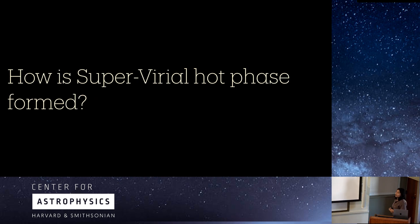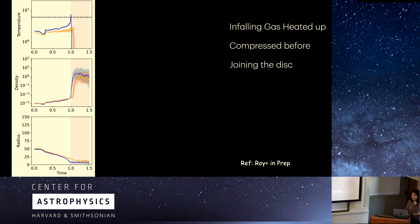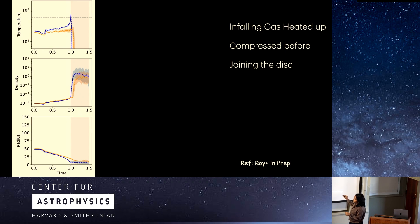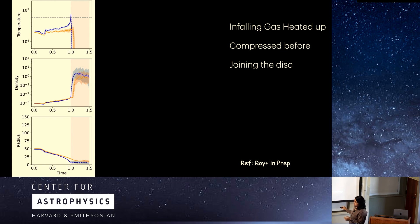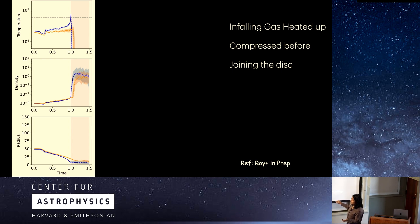The question then is: how is this super virial hot phase formed? We tracked gas particles back in time that we find to be super virial. The temperature tracks back to the virial temperature, slowly increases to the super virial phase, and then cools down immediately. There is also an increase in density. The super virial gas is found within 10 kiloparsecs but it is coming from 50 kiloparsecs — it is actually infalling gas.